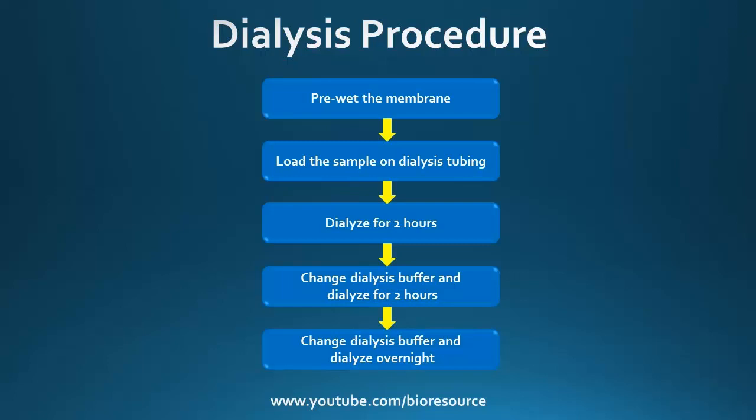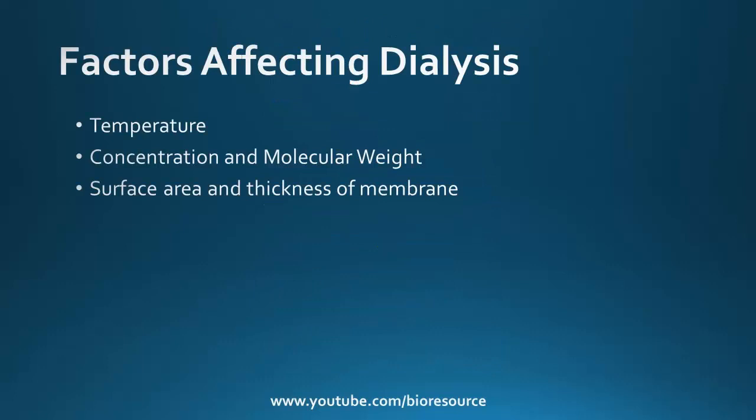Let's see the factors that affect dialysis. There are certain factors which affect dialysis: temperature, concentration, molecular weight, and the surface area and thickness of the membrane. The rate of diffusion increases with an increase in temperature, so the dialysis process is faster at room temperature than at 4°C, because the migration of molecules is faster at higher temperatures. However, the thermal stability of the protein needs to be considered when increasing the temperature.